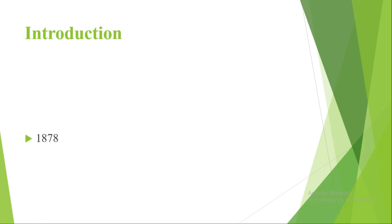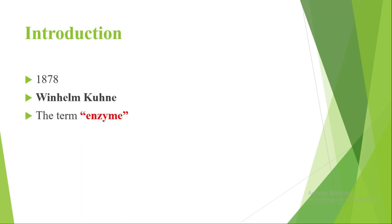To introduce this topic, in 1878 there was a scientist called Winham Q. who used for the first time the term 'enzyme.' Before that, it was known as a catalyst and its functioning was discovered, but there was no proper name. So in 1878, a proper name called 'enzyme' was given. If you look at the structure of an enzyme, it is a globular protein — a very compact and complex structure based on proteins.